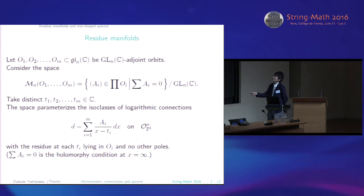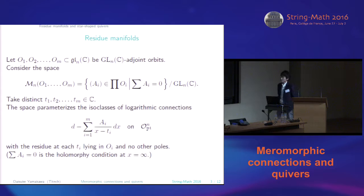Let O1, O2, dot dot dot Om be conjugacy classes of n-by-n matrices, GLN C adjoint orbits. Then consider this space. This space is defined by the space consisting of elements of the product of all orbits with sum equal to zero divided by the diagonal action of GLN. So this is very basic space.